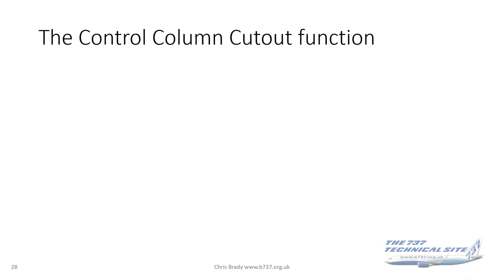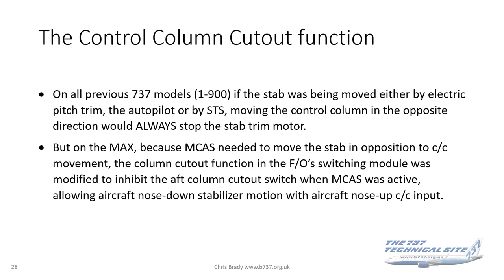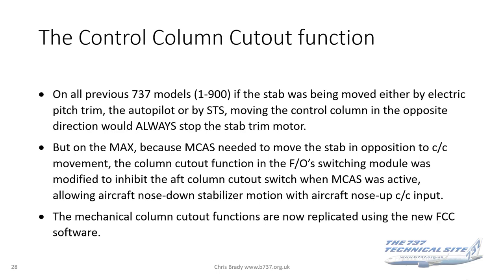Let's take a closer look at the control column cutout function. On all previous 737 models, if the stab was being moved — either by electric pitch trim, the autopilot, or by speed trim — moving the control column in the opposite direction would always stop the stab trim motor. Unfortunately on the MAX, because MCAS needed to move the stab in opposition to the control column movement, the control column function was modified to inhibit the aft control column cutout switch when MCAS was active. The forward one was left as-is, but the aft one was modified, allowing aircraft nose-down stab motion with aircraft nose-up control column input. The mechanical control column cutout function has now been restored.